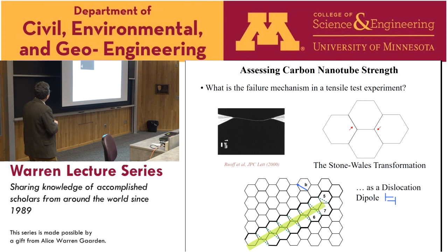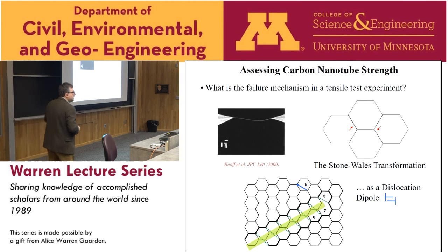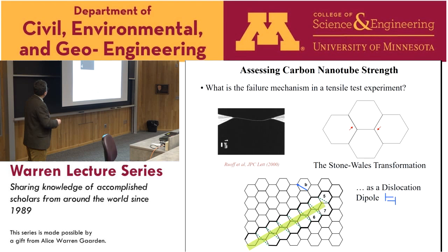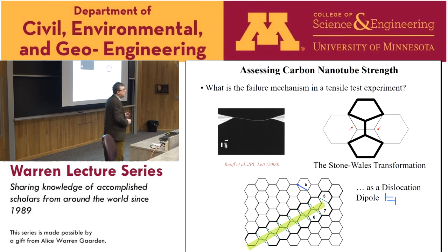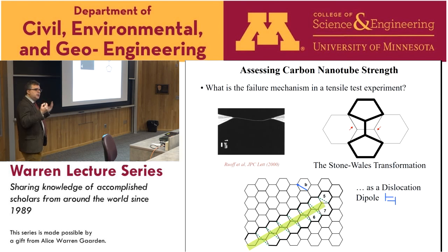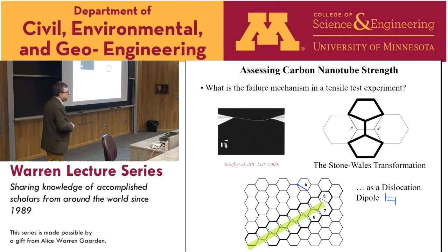At the time when I started working on this subject, the Stone-Wales transformation in a carbon nanotube wall was considered a plausible mechanism. Imagine somewhere on the structure you have four hexagonal carbon rings, and the applied strain is around a certain direction. A bond rotates by 90 degrees, transforming these four hexagons into pentagon-pentagon-heptagon-heptagon. This is a defect in the hexagonal wall, called a Stone-Wales transformation — it can also be thought of as a dislocation dipole in mechanical terms.